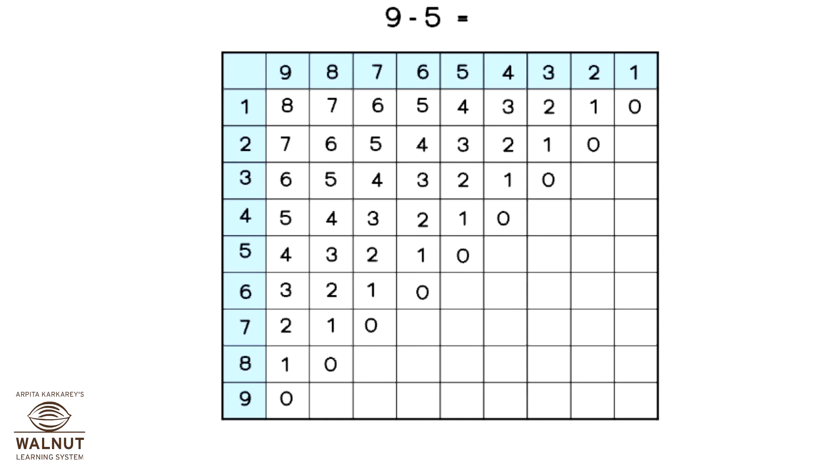Try doing the subtraction 9 minus 5. We look for 9 in the top row, then we look for 5 in the first column. See where they meet? They meet at 4. That is your answer. So 9 minus 5 is equal to 4.